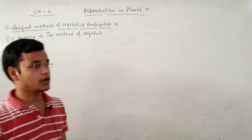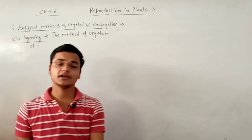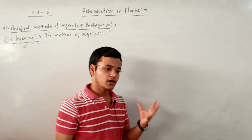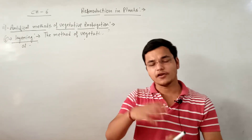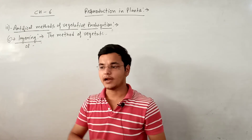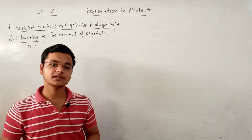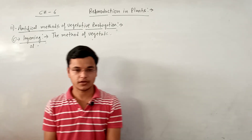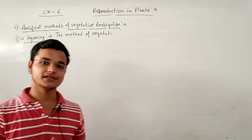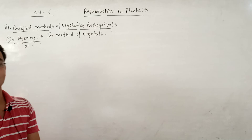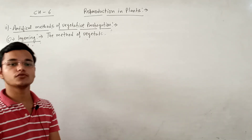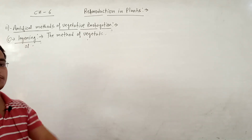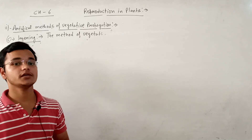Disadvantage क्या हो सकता है vegetative propagation का? Disadvantage आप यह कह सकते हैं कि lack of variation. अगर variation नहीं होगा तो वो particular plant कुछ time में ही environment में survive नहीं कर पाएगा. कोई disease, कोई ऐसी environmental calamities उसको easily harm कर सकती है due to lack of variation. यह advantage और disadvantage है vegetative propagation के. तो यहाँ पर हमारा vegetative propagation finish होता है - asexual mode of reproduction in plants - finished. Now, in the next topic we will discuss about sexual reproduction in plants - plant कैसे sexually reproduce होते हैं.